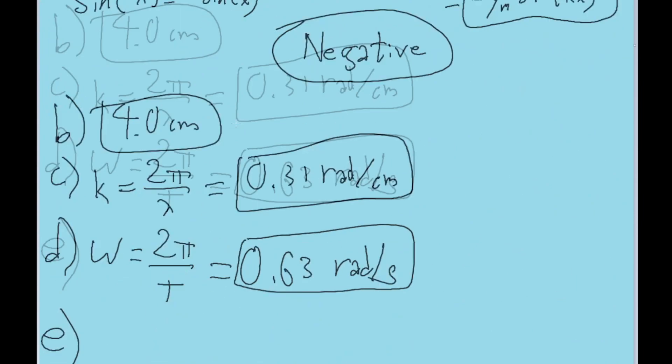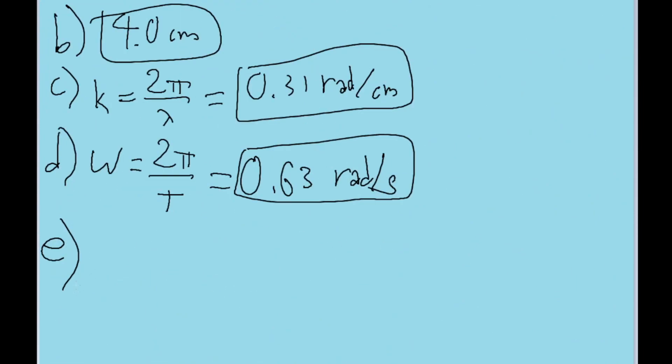And part g asks us to find the speed of the wave. Again, there's a formula for this. The speed of the wave, or v, is equal to the frequency times the wavelength of the wave. We don't have the frequency right now, but we do have the period. And frequency is equal to 1 divided by the period. So the wavelength divided by the period, which we find is equal to 2.0 centimeters per second. So that is the speed of the wave.